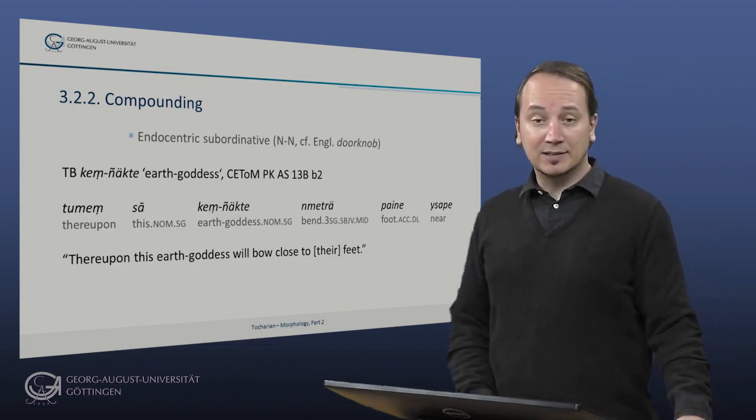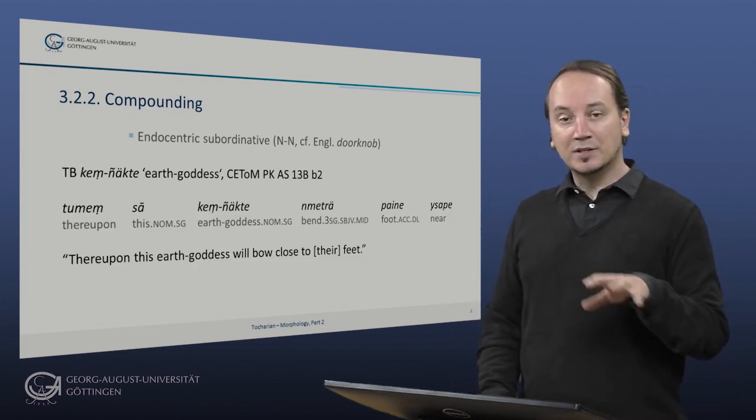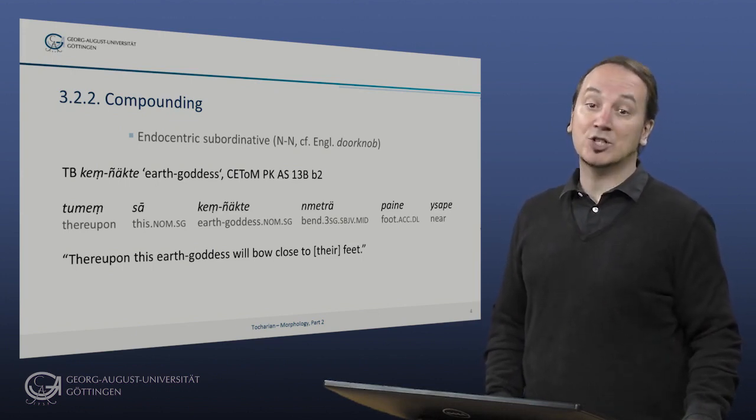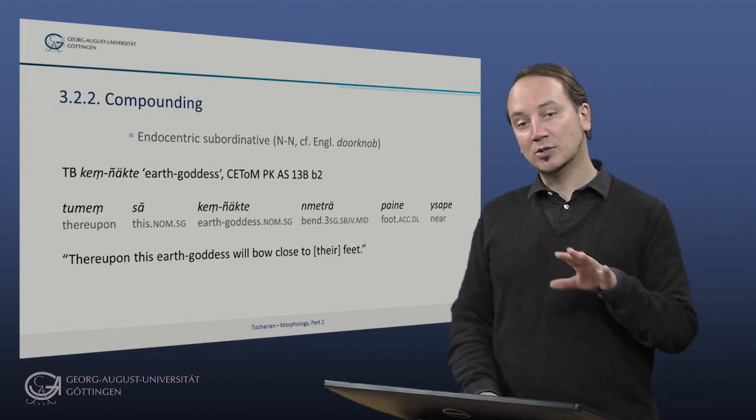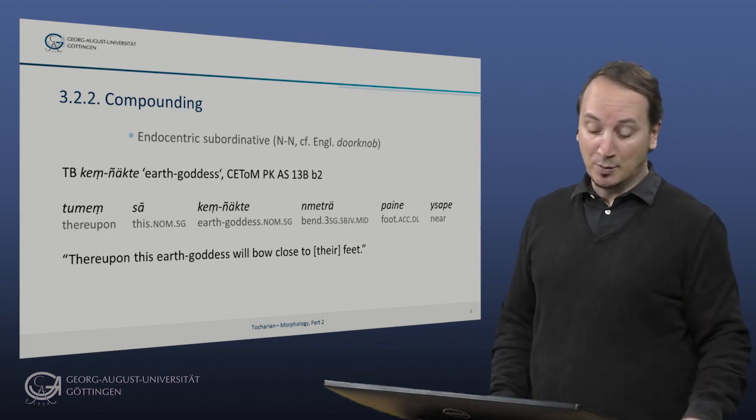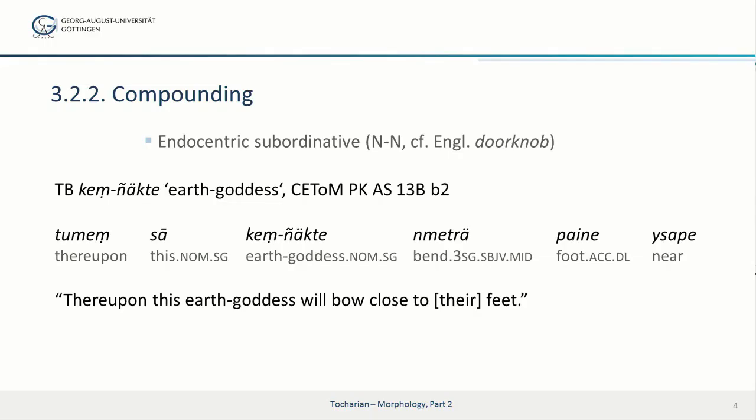So let's look at the earth goddess here. This passage is taken from the legend of Kalma Shapada and Satusuma. This is a Jataka, a genre concerned with the previous births of the historical Gautama Buddha. Tumensa Kenyukte, Niemetri, Peine, Yisabe. Thereupon this earth goddess will bow close to their feet. And here we have our earth goddess.